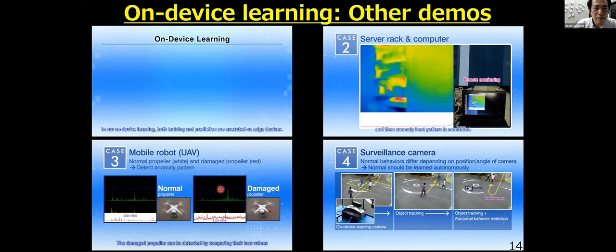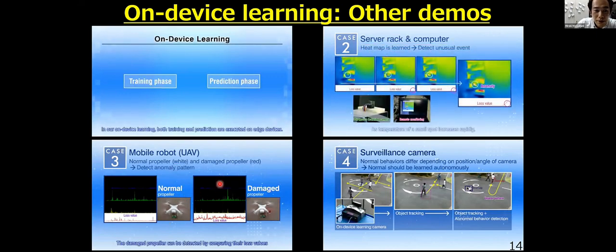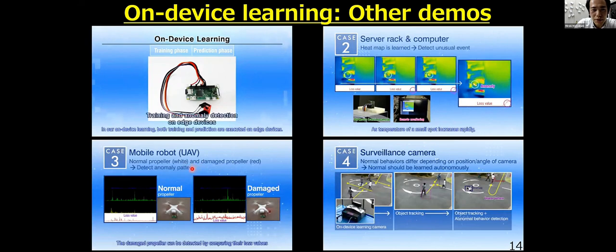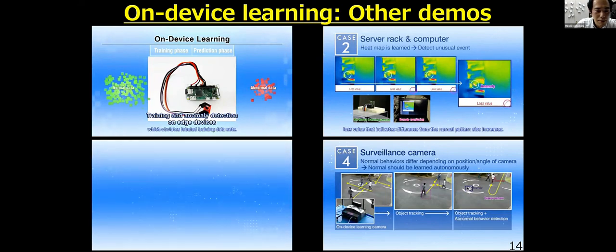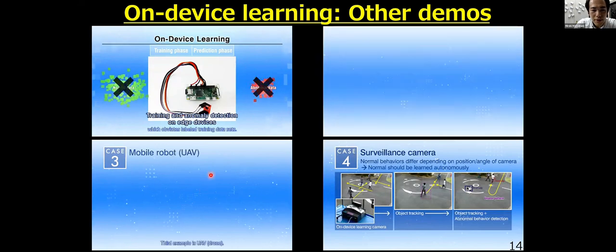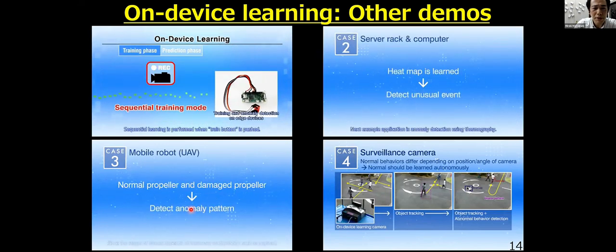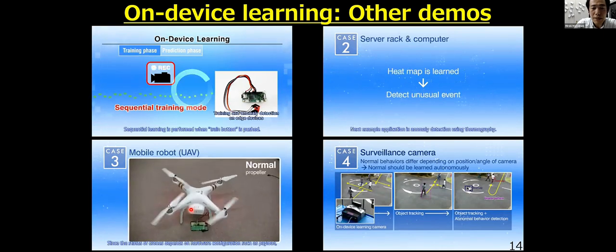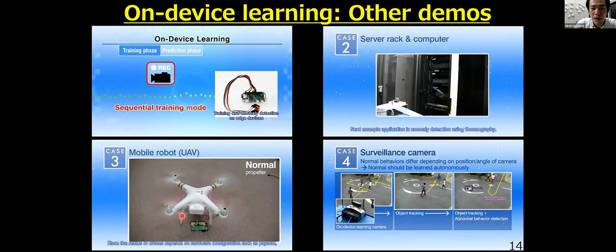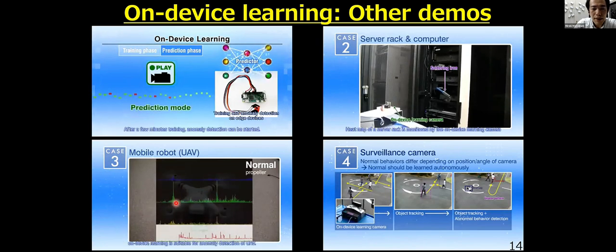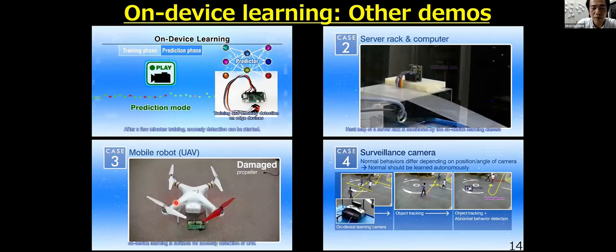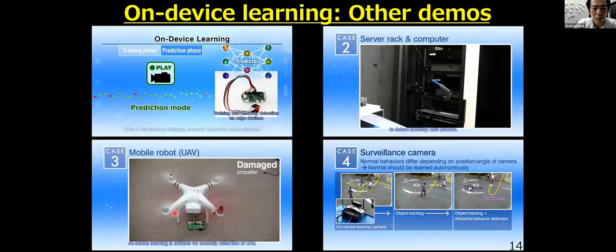In the lower left video, on-device learning is used for detecting abnormal vibrations of UAVs. It uses vibration sensors. The system learns normal vibration patterns of the propeller first, and then it can detect abnormal vibrations of the propeller of UAVs.